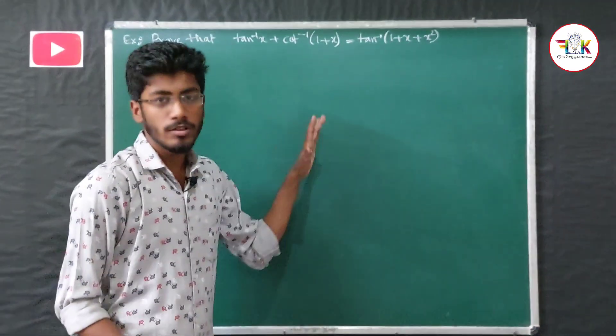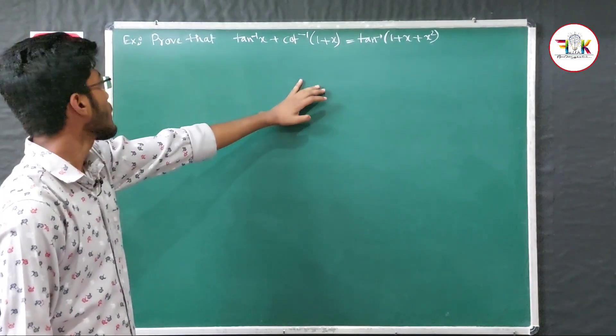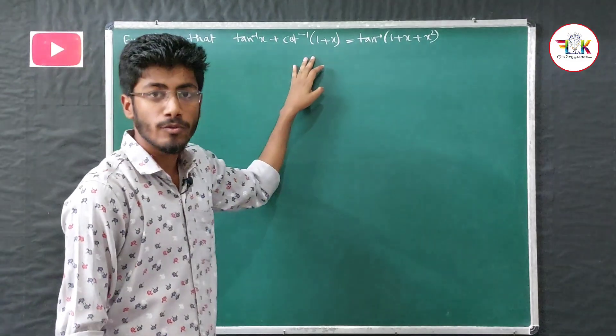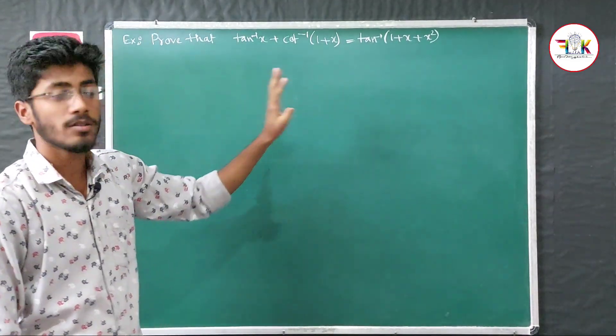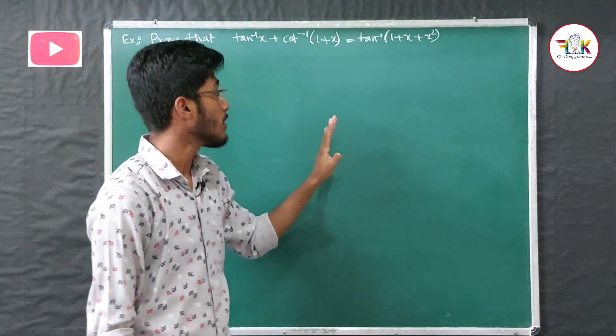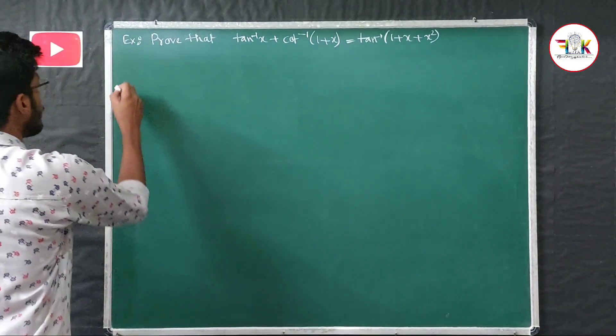Now come to the second question. We have to prove that tan⁻¹x + tan⁻¹(1/(1+x)) equals tan⁻¹(1 + x + x²).